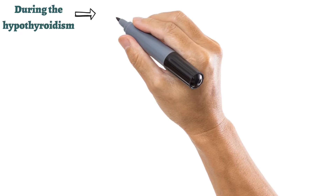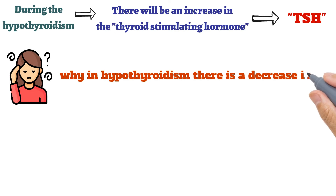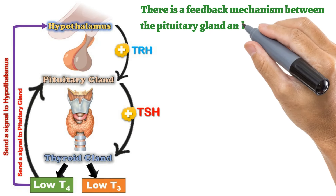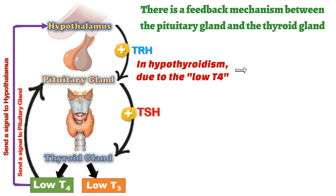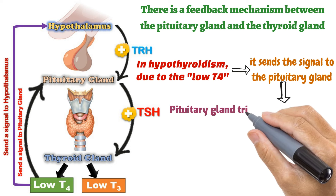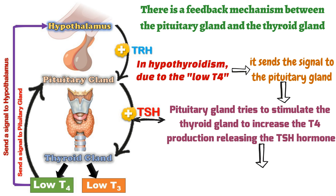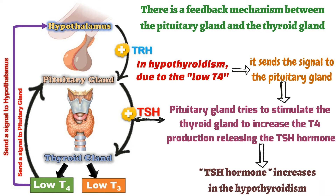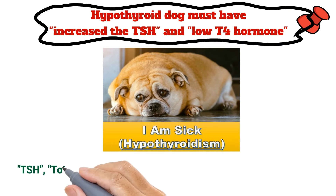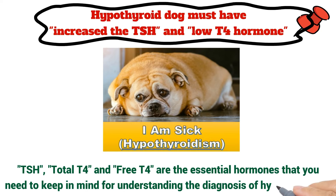During hypothyroidism, thyroid-stimulating hormone (TSH) will be elevated. Due to the feedback mechanism between the pituitary and thyroid glands, low T4 signals the pituitary, which responds by releasing more TSH to stimulate the thyroid gland to increase T4 production. Therefore, a hypothyroid dog must have increased TSH and low T4. TSH, total T4, and free T4 are the essential markers to keep in mind for understanding the diagnosis of hypothyroidism.